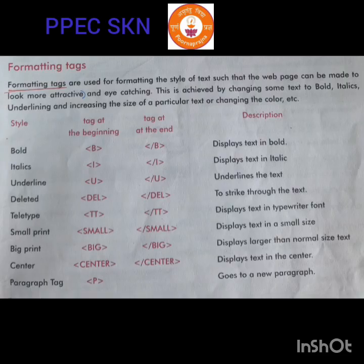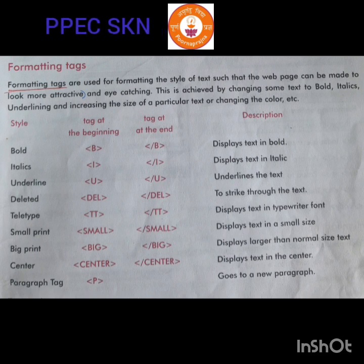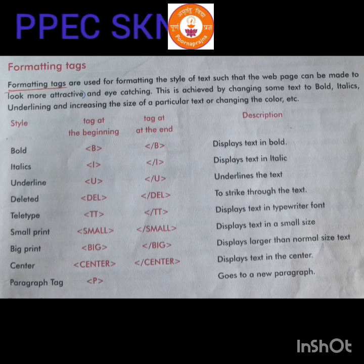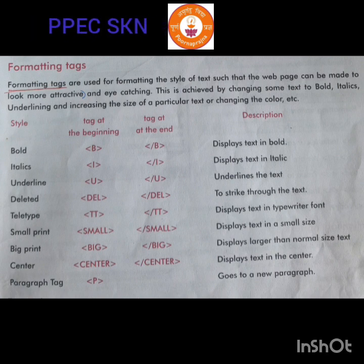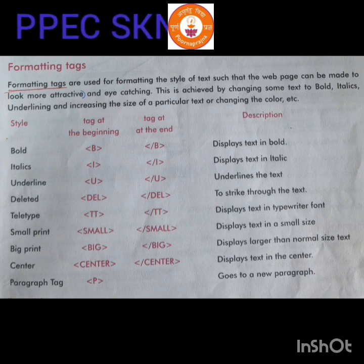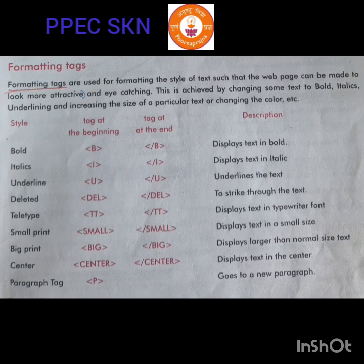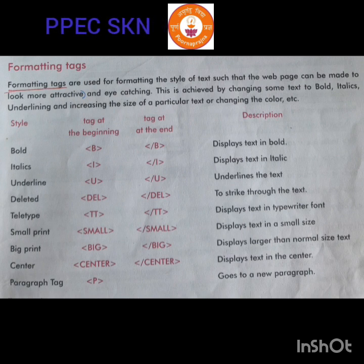Today, first we are going to discuss about formatting tags. Consider our normal Word document. After typing in a Word document, we are giving lots of formatting options to make your document more attractive. Like that, we can use different formatting options in HTML also. But for that we need to learn tags. Those tags are known as HTML formatting tags. Formatting tags are used for formatting the style of text such that the web page can be made to look more attractive.